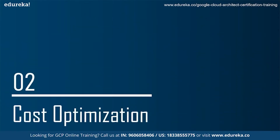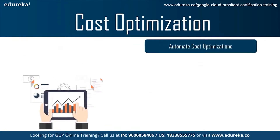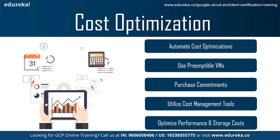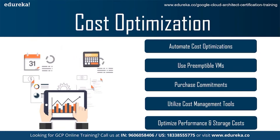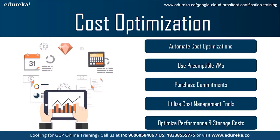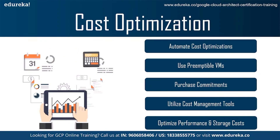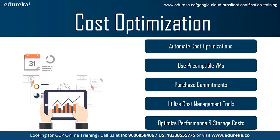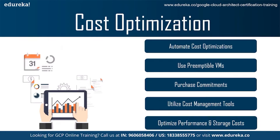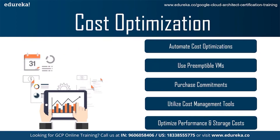Moving on to cost optimization. One best practice is to automate tasks and reduce manual intervention. Automation is simplified using a label, which is a key-value pair applied to various Google Cloud services. You can attach a label to each resource such as compute instances and filter resources based on their labels. The second best practice is using preemptible virtual machines. Preemptible VMs can save up to 80% compared to a normal on-demand virtual machine — a huge savings for short-lived or non-urgent workloads.